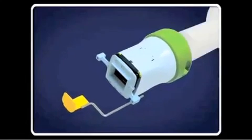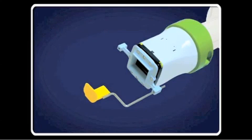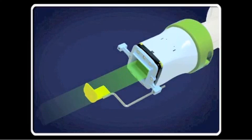TruAlign is a rectangular collimator that slides over the cone of your existing x-ray system to shape and control the size of the x-ray beam to the size of the receptor.